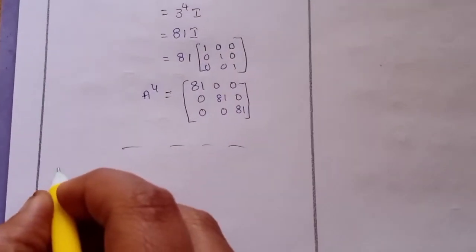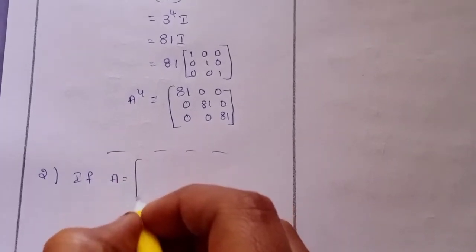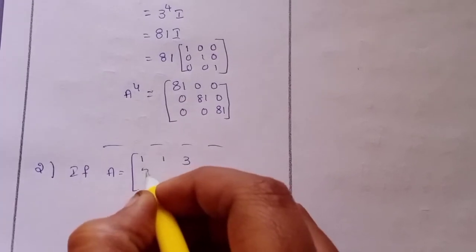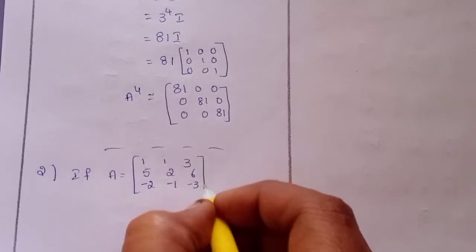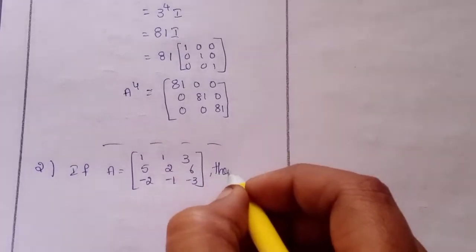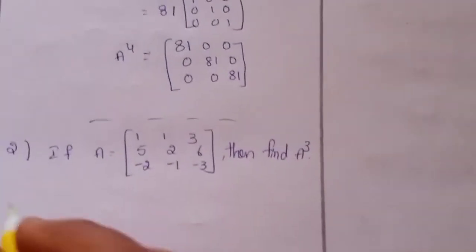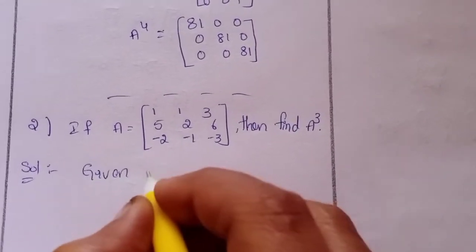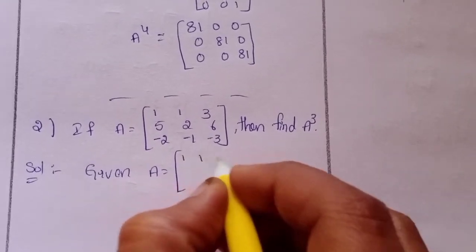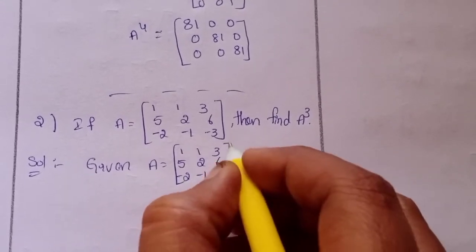Next, second question. Given A equals the matrix [1,1,3 / 5,2,6 / -2,-1,-3].